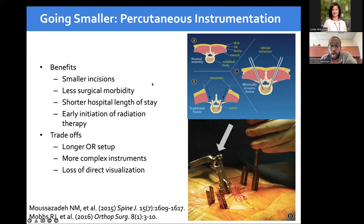Going even smaller with percutaneous minimally invasive approaches: instead of splaying open and dissecting all muscle and fascia, we now make smaller incisions that allow us, in a shorter time with less blood loss, less incision size, and less pain, to achieve the same stabilization goals. The tradeoff is longer OR setup, more instrumentation, and loss of direct anatomical visualization.